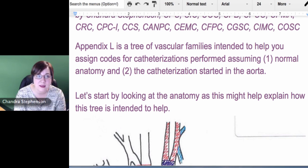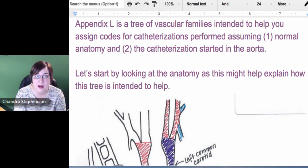Appendix L is a vascular tree. The goal of that vascular tree is to help you figure out how far a provider inserted a catheter when they were doing a catheterization. But that appendix actually makes two assumptions. One they call out right at the beginning of the chapter - they assume that this started from the aorta. The provider already had the cath in the aorta and they were making selections off of the aorta.